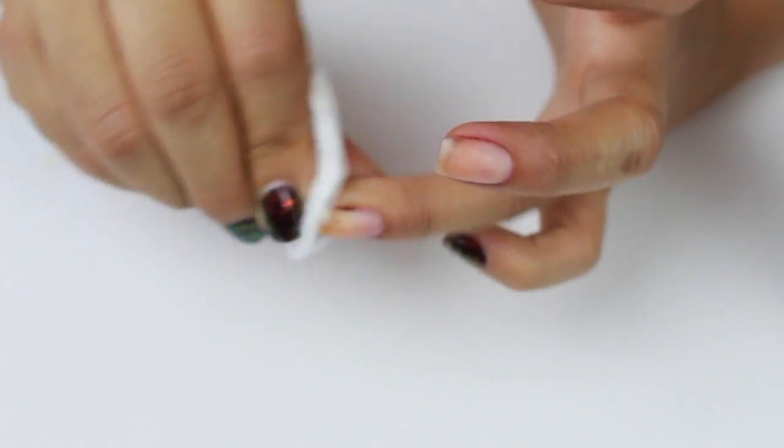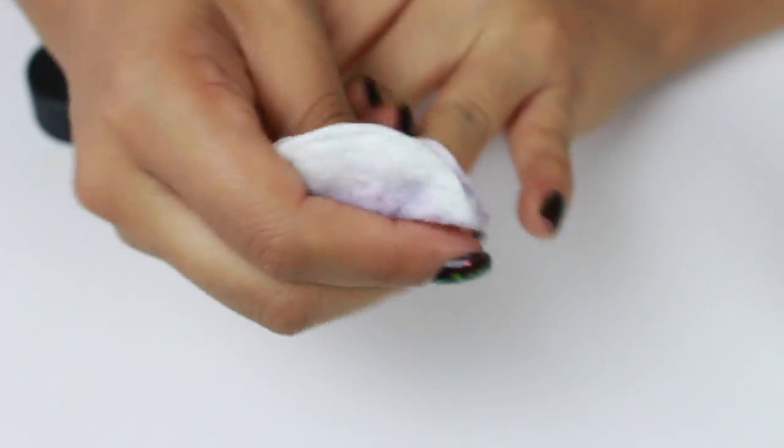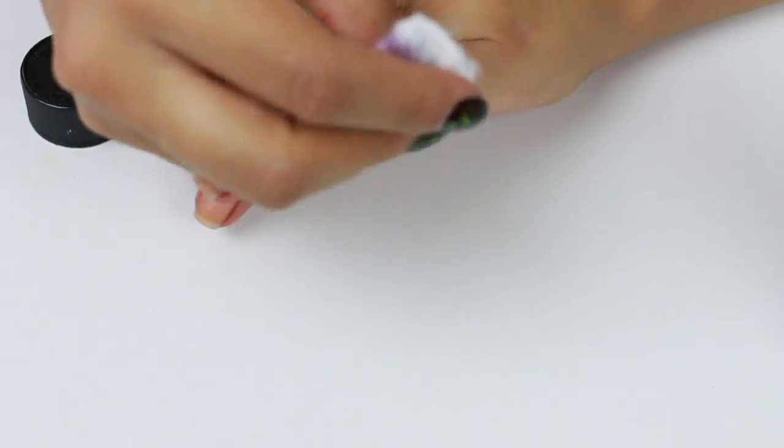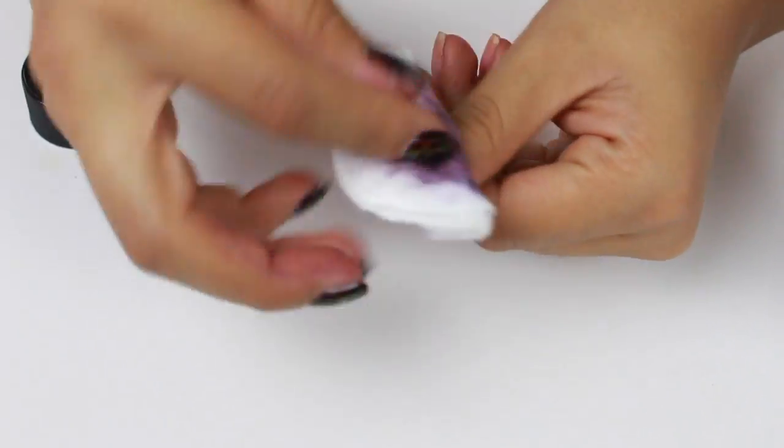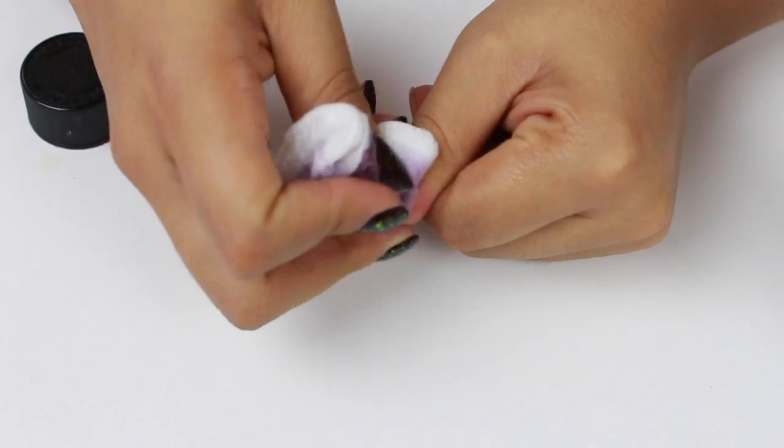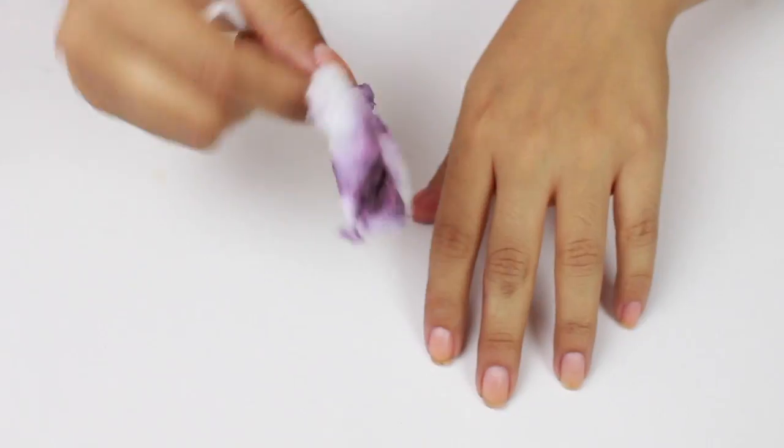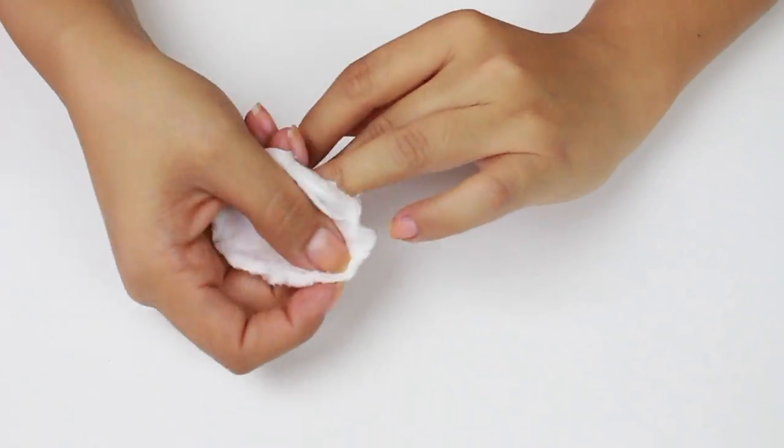As you can see, this nail polish that I have on right now has a bunch of little sparkles and holographic specs, and even that, it takes it off with one little pad. Usually it takes a couple, but with acetone, that's all I need.